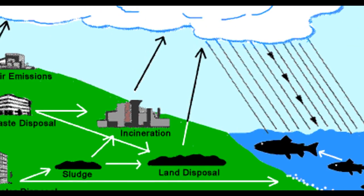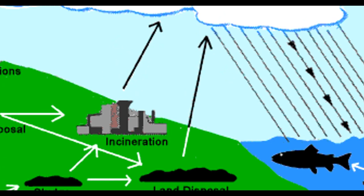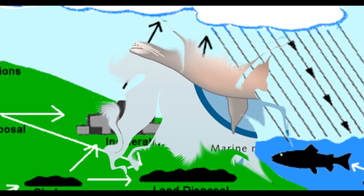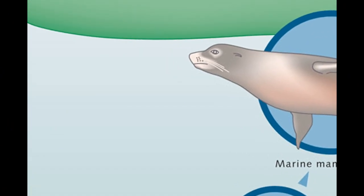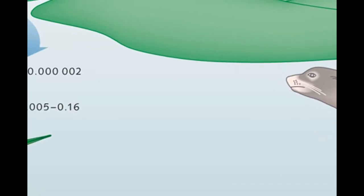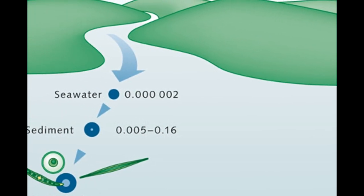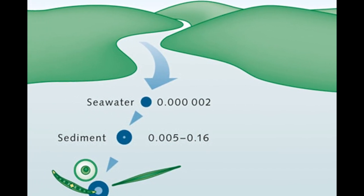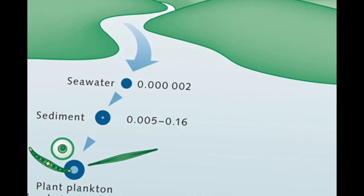Surface runoff of pesticides can alter the gender of fish species genetically, transforming male into female fish. Heavy metals enter the environment through oil spills, such as the Prestige oil spill on the Galician coast, or from other natural or anthropogenic sources.